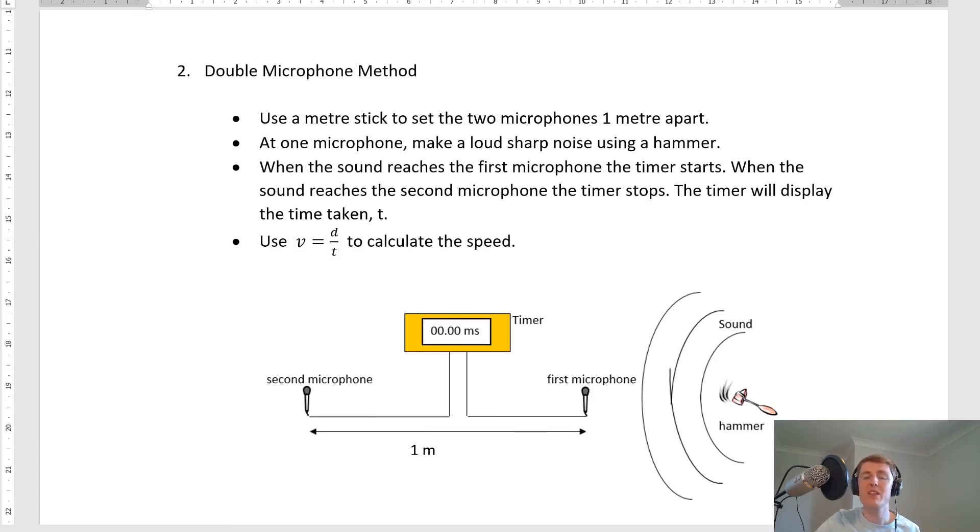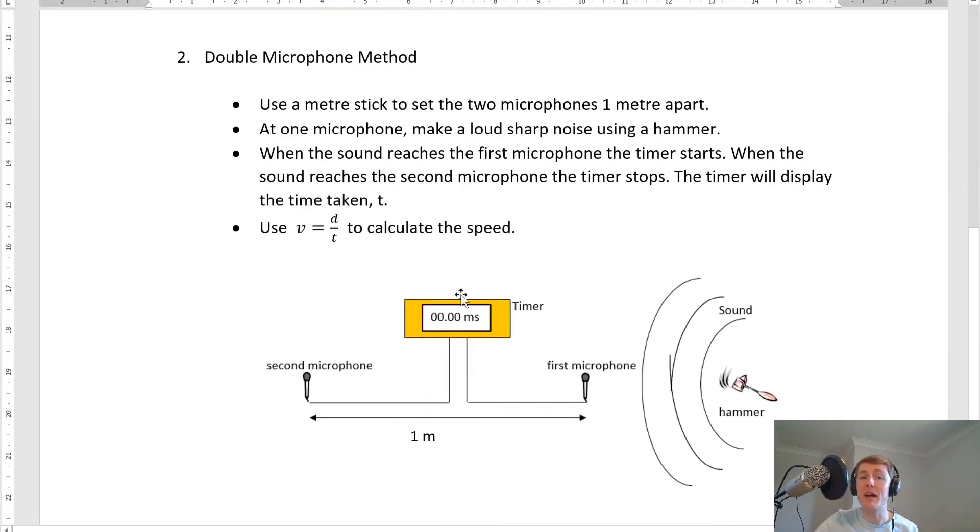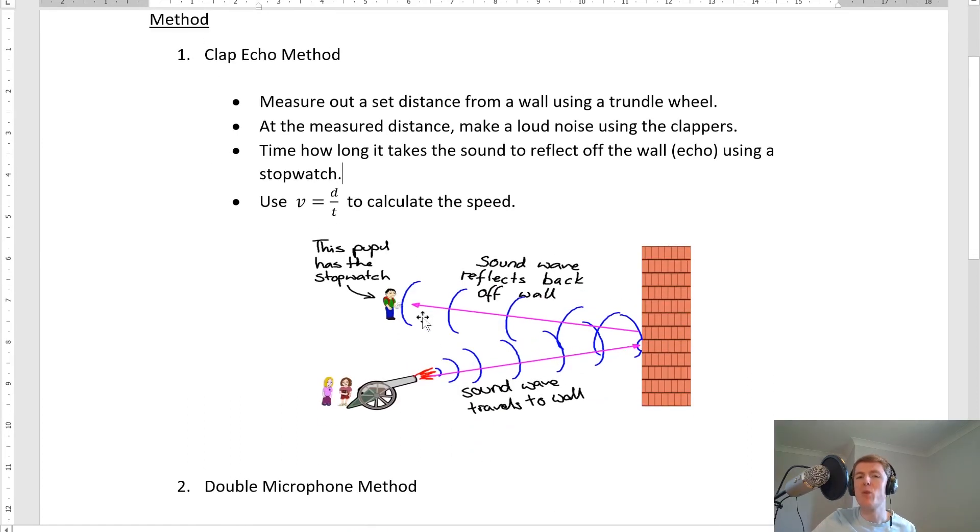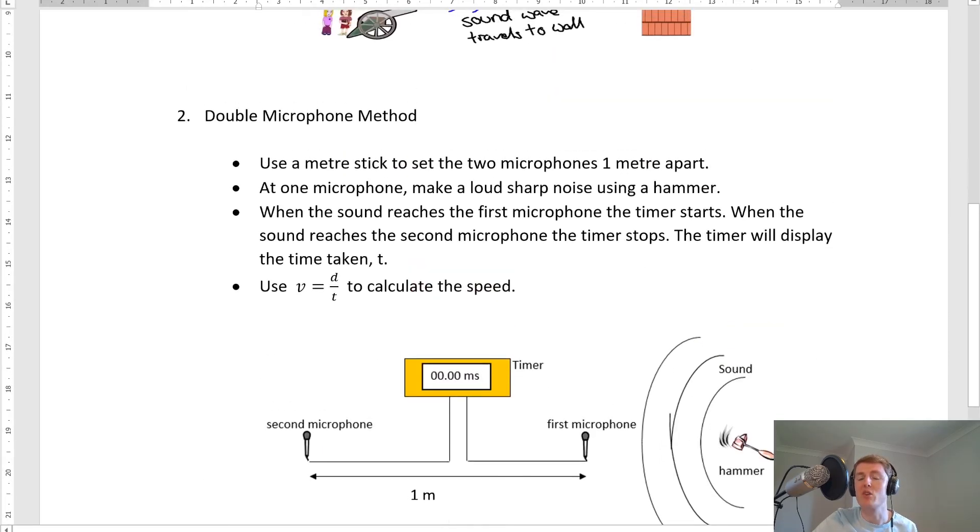Now if you were to compare your two estimates for the speed of sound in air, you would hopefully find that the double microphone method is much more accurate than the clap echo method. As opposed to method one, where we relied on a student to measure the time with a stopwatch, so that involves human reaction time, whereas method two doesn't. So method two should produce an answer closer to 340 metres per second.